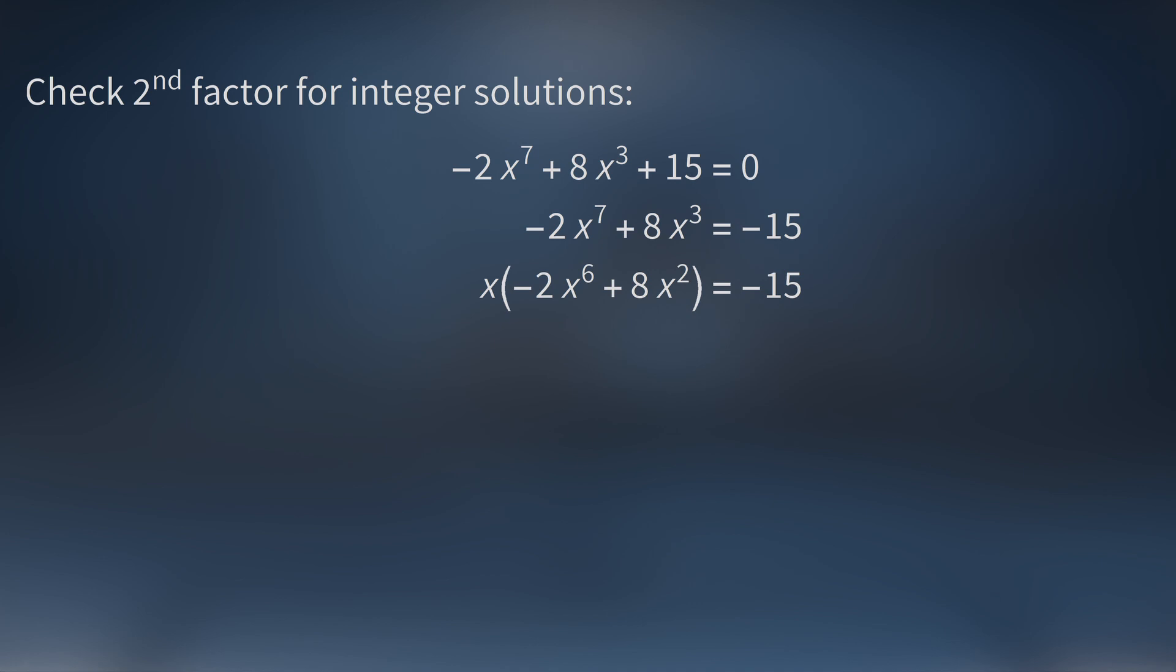Our objective is to find any integer x that's a solution to this equation. This means the first factor x needs to be an integer. But if x is an integer then the second factor -2x⁶ + 8x² will also be an integer. This is because all the coefficients are integers. So on the left hand side both factors are integers. This means that x must divide -15. This is the key. All we have to do is make a list of all divisors of -15 and check them one by one.